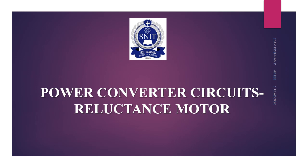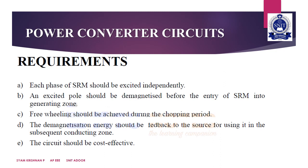First, let's see the main requirements of power converter circuits. Each phase of the switched reluctance motor should be excited independently. Second, an excited pole should be demagnetized before the entry of the SRM into the generating zone. Third, freewheeling should be achieved during the chopping period. Fourth, the demagnetization energy should be fed back to the source for use in the subsequent conducting zone.